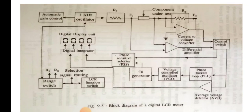The range switch automatically selects the range value. The one kilohertz oscillator block at the top is used for applying the test signal to the component under test. The oscillator generates a test signal with a frequency of one kilohertz, and its gain is controlled automatically by the automatic gain control (AGC) block.